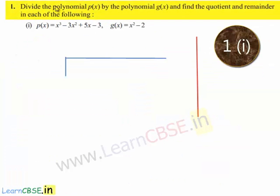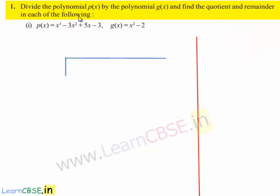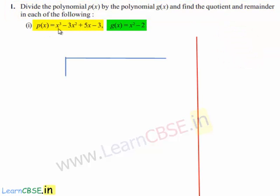Coming to the first problem: divide the polynomial p of x by the polynomial g of x and find the quotient and remainder in each of the following. The first one given to us is p of x is equal to x cube minus 3x square plus 5x minus 3, and g of x is equal to x square minus 2. We are asked to divide the polynomial p of x by the polynomial g of x.